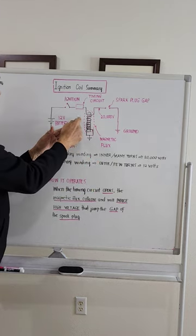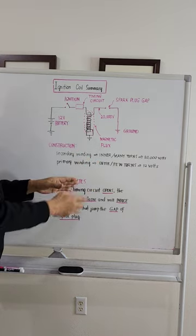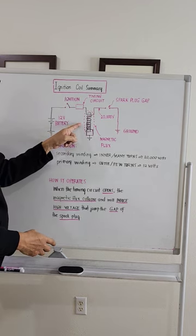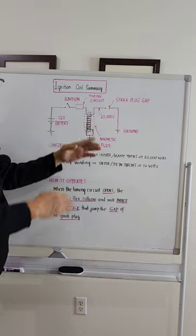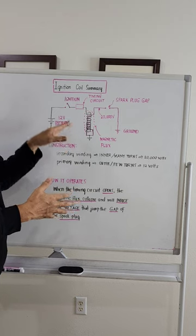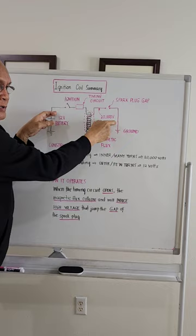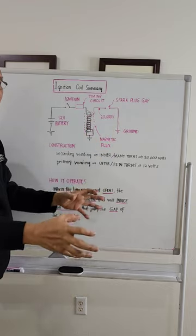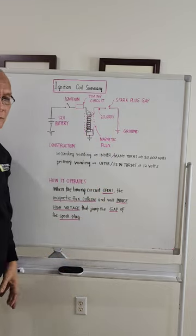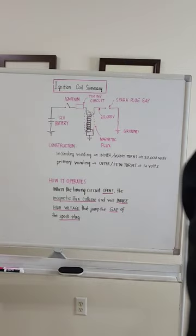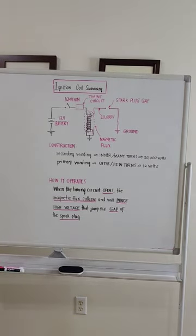So it is simply a high voltage transformer. The primary winding is few turns, the secondary winding consists of many turns. That's why if you apply 12 volts, it will produce 20,000 volts. That's the principle of the operation of the ignition coil.